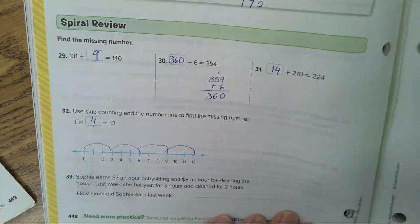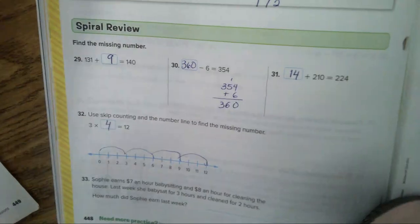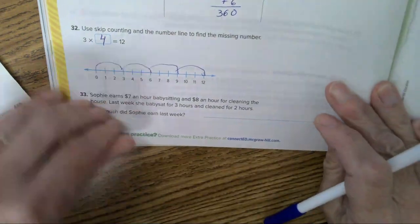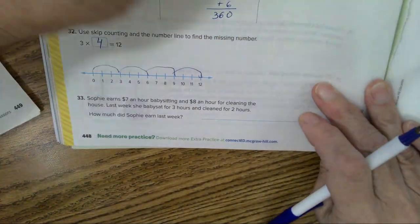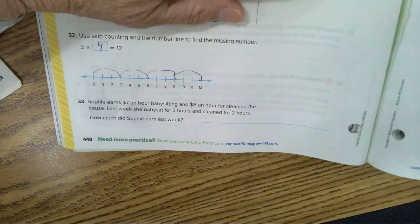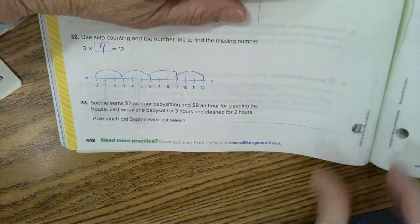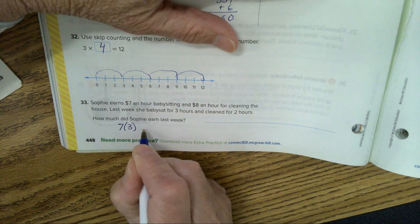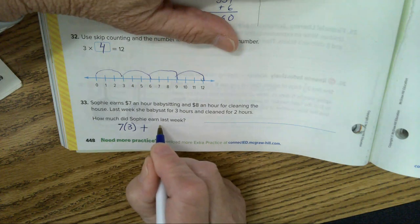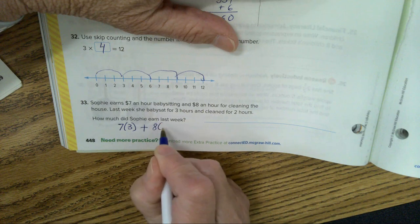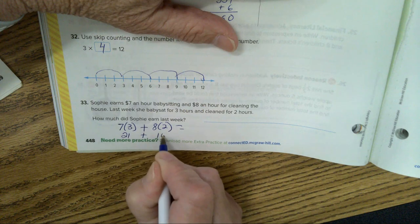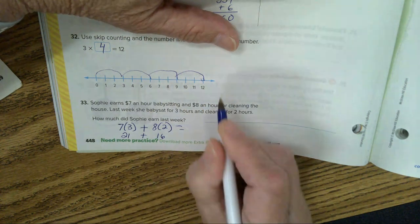And now, the last problem is about Sophie. Sophie earned $7 an hour babysitting and $8 an hour for cleaning the house. Last week, she babysat for 3 hours and cleaned for 2. How much did Sophie earn? Well, 7 times 3, that's the babysitting and cleaning is 8 times 2. So, you have 21 plus 16 and that will equal $37.